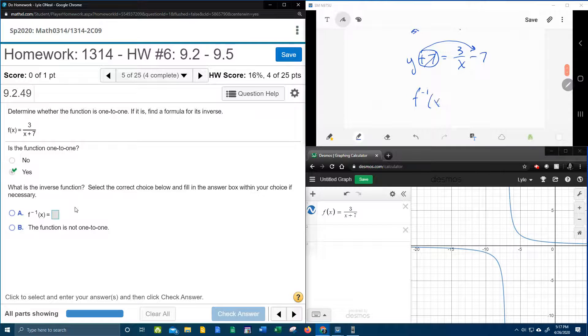This is now the inverse function, 3 over x minus 7. And so this should be our inverse function.